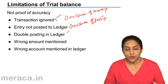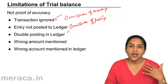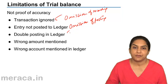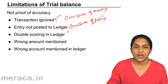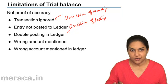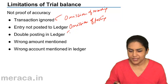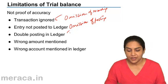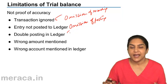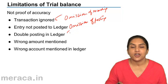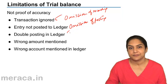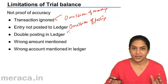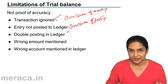Similarly, if a wrong account is mentioned when posting — suppose instead of debiting machinery account, we debit wages account — these are called errors of principle. The error will not be reflected in the trial balance; it will continue to tally.